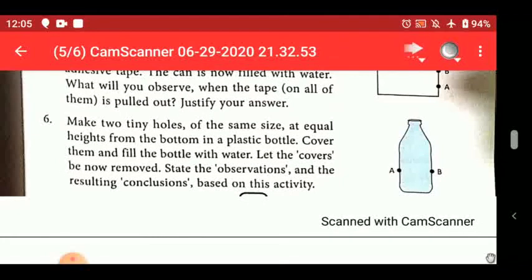Then sixth, make two tiny holes of the same size at equal heights. Cover them and fill the bottle with water. Now state the observation. What will you conclude? That when we remove the tape, water will flow from A and B with exactly the same pressure to the same distance. From this we observe and conclude that at the same height, liquid exerts the same pressure in all directions.